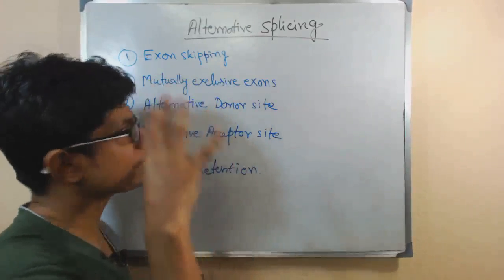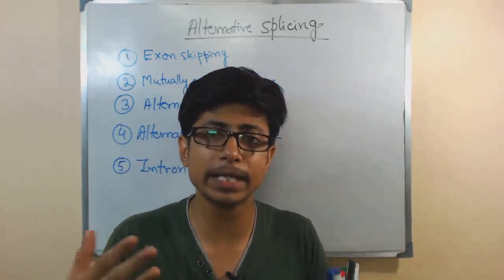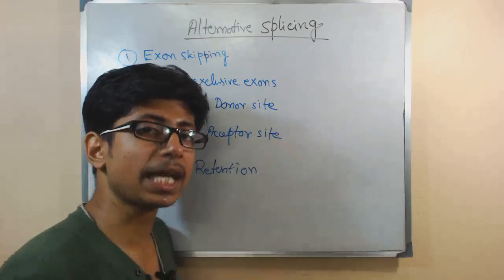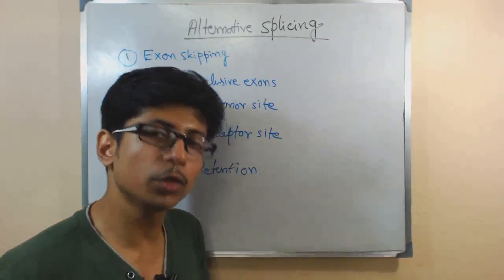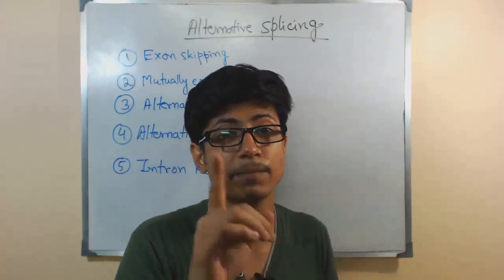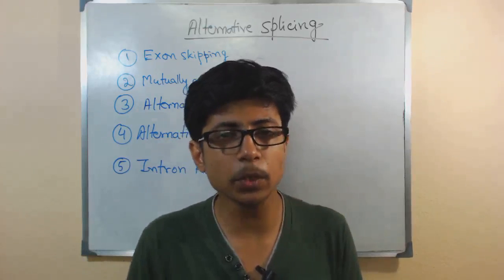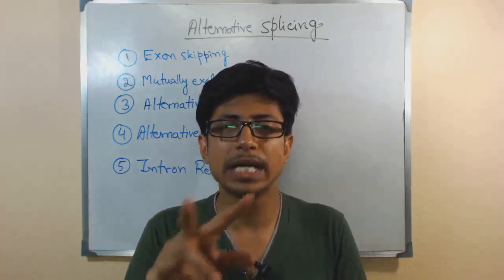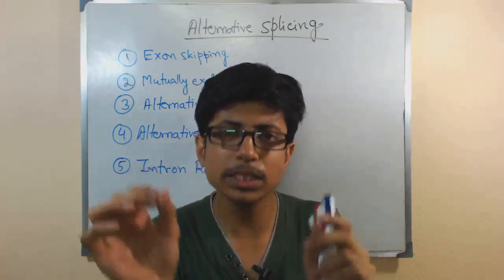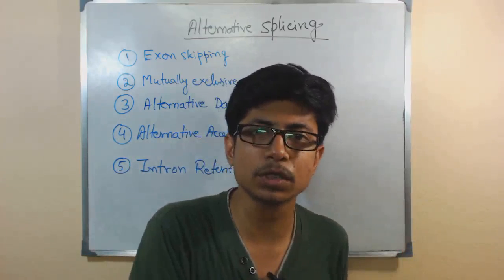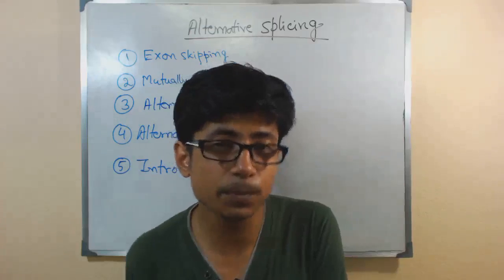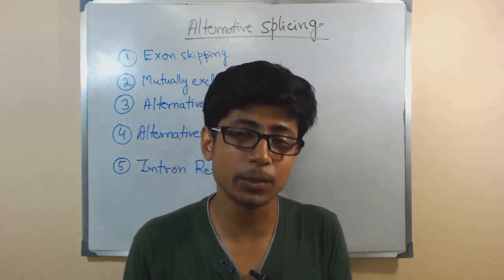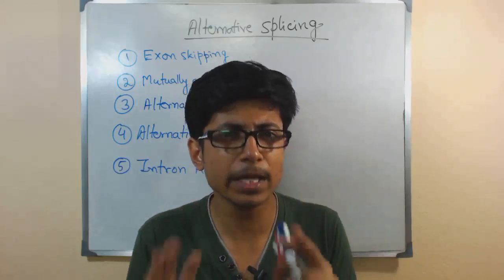Now, both normal splicing and alternative splicing are used for making a mature mRNA ready for translation. But alternative splicing is a type of RNA editing mechanism which helps us to produce different varieties of protein from a single same gene. So we have a single gene that produces multiple varieties of protein. How is that possible? The only way is to keep or exclude certain coding regions to see what kind of protein is produced.